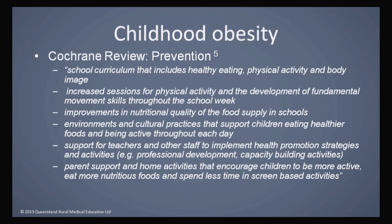What does Cochrane say? There were a couple of Cochrane reviews on childhood obesity. The first on prevention recommends school-based interventions to prevent childhood obesity, but also support for parents to enact changes at home — because if children go home to pro-obesity environments, they'll still end up with obesity. School provides a captive audience. Recommendations focus on physical activity, healthy eating, and addressing the culture of food and body image.